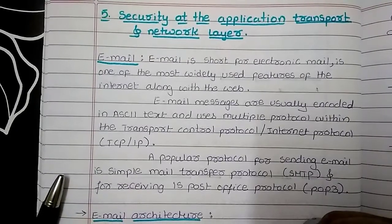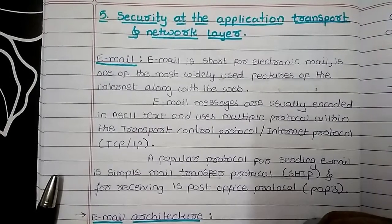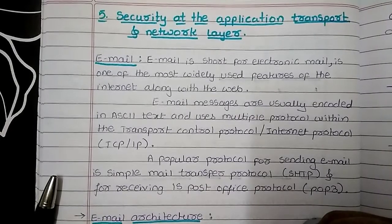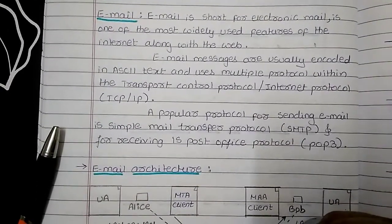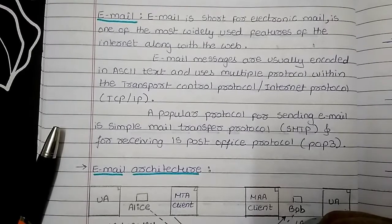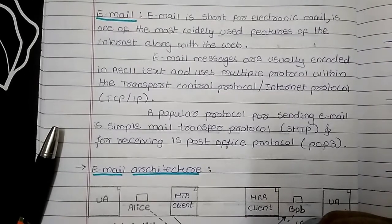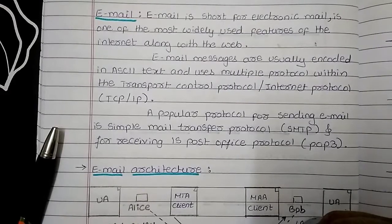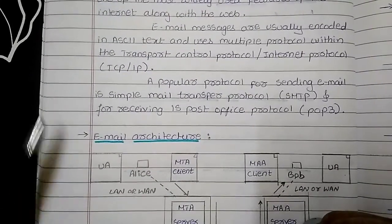We will see the concept of security at the application, transport, and network layer. Email is an electronic mail, which is the most widely used feature of the internet along with the web. Email usually encodes its messages in ASCII text format using multiple protocols within TCP/IP. The popular protocol for sending email is SMTP, and it uses the protocol called Post Office Protocol, or POP3, for receiving mails.